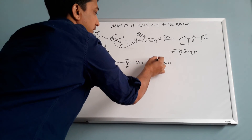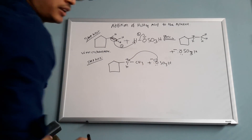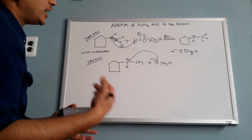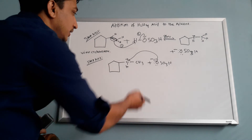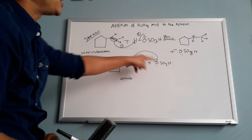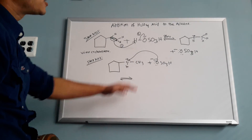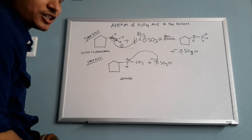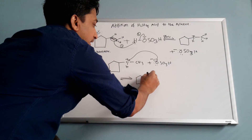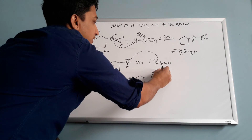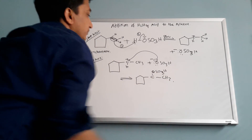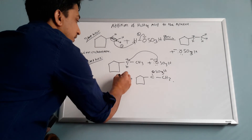In step two, the two lone pairs on the negatively charged oxygen are going to attack the positively charged carbon, because you have a positive charge and a negative charge — they will always attract. Negative charge always attacks; positive charge never attacks. This is called addition — if you add sulfuric acid, OSO3H attaches and this is the mechanism. This is a two-step mechanism.